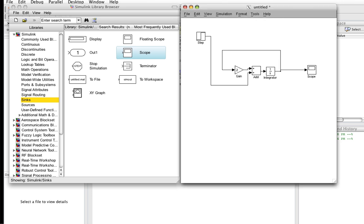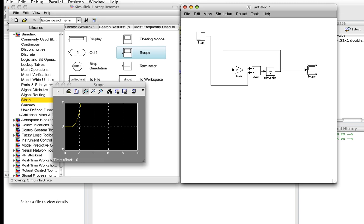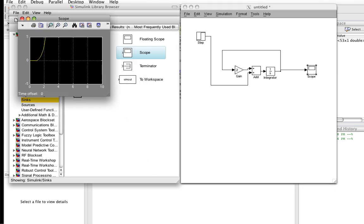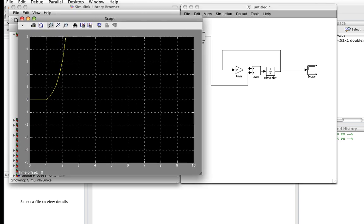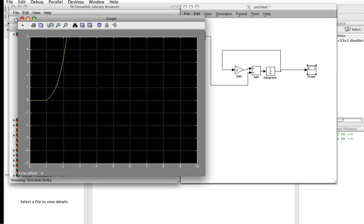So we'll tell it to start. It runs for a while, and then we bring up the scope, which represents the output. And you'll notice that it's 0 up until time 1, and then all of a sudden it just gets really, really big.